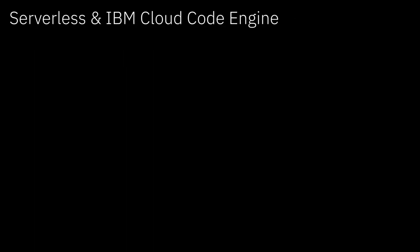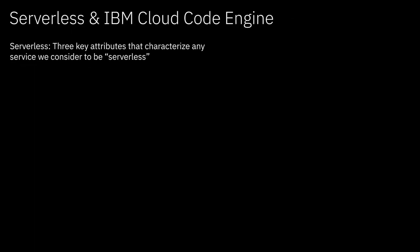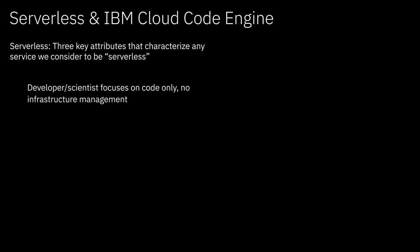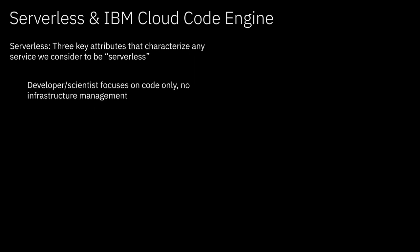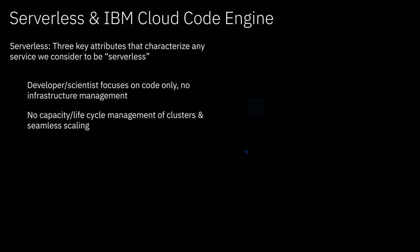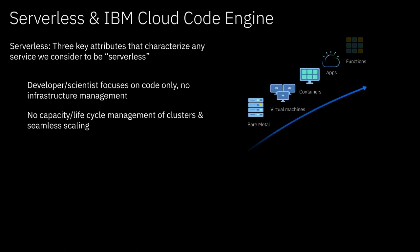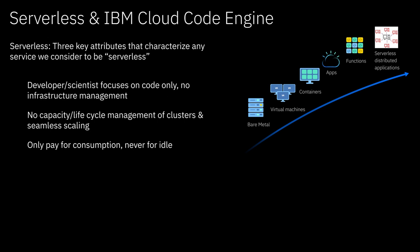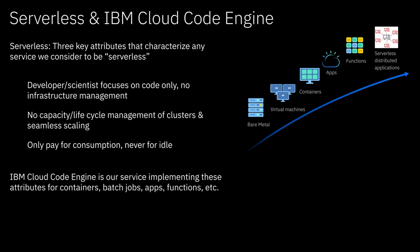I want to talk a little bit about serverless. What are the three key attributes that constitute serverless from our perspective? The developer and scientist only focuses on the code — they never have to deal with infrastructure or infrastructure management. They do not have to worry about capacity management, like bringing up machines or tearing them down, or about seamless scaling. Also, they only pay for consumption — they never pay for idle capacity. From a product perspective, IBM Cloud Code Engine is our service that implements all of these attributes for a variety of artifacts: containers, batch jobs, apps, functions, and so on.